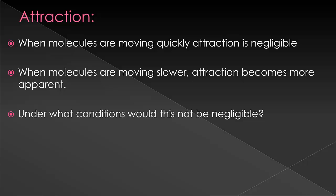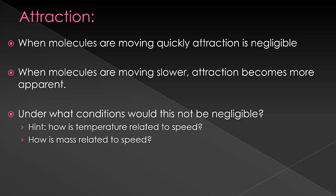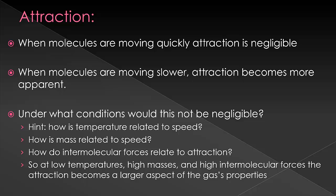Well, when are molecules moving very slowly? Think about how temperature is related to speed. How is mass related to speed? How do intermolecular forces relate to attraction? So, given all of these hints, at low temperatures, high masses, and high intermolecular forces, the attraction becomes a much larger aspect of the gas's properties. So, these are the three situations where you would have to be watching out for a gas being not ideal. Low temperatures, high masses, and if there's very high intermolecular forces.